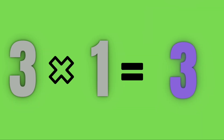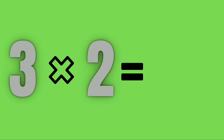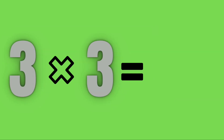Three ones are three. Three twos are six. Three threes are nine.